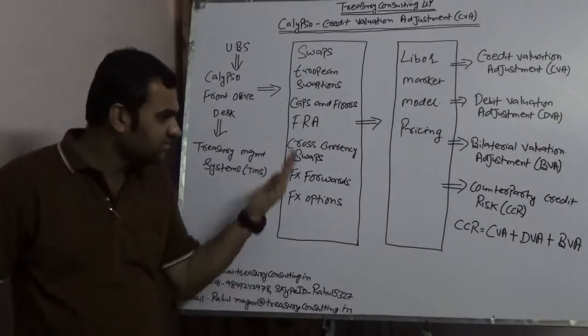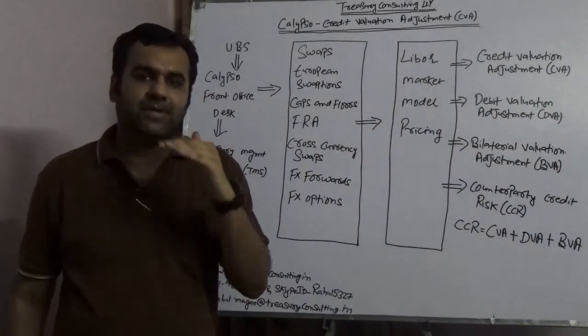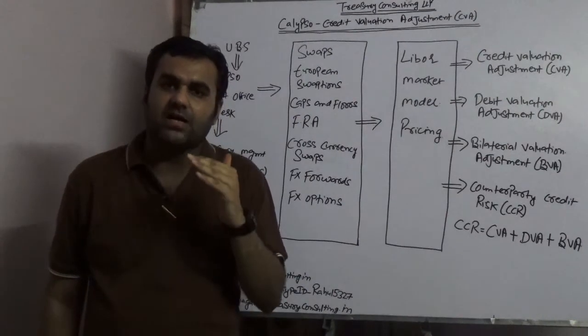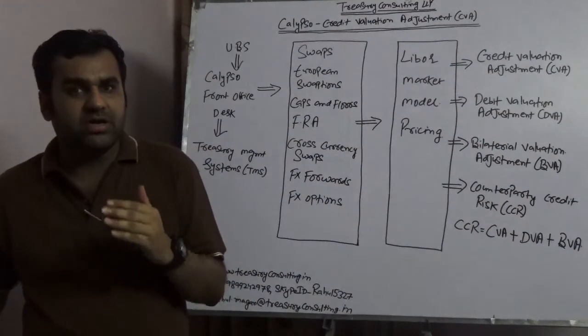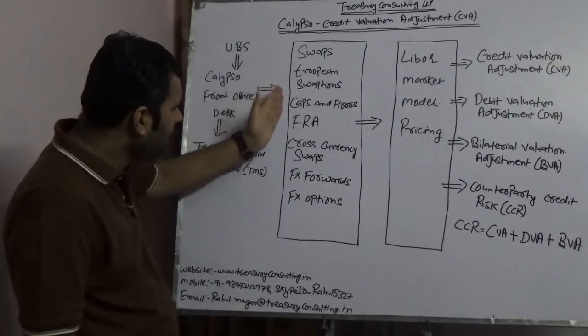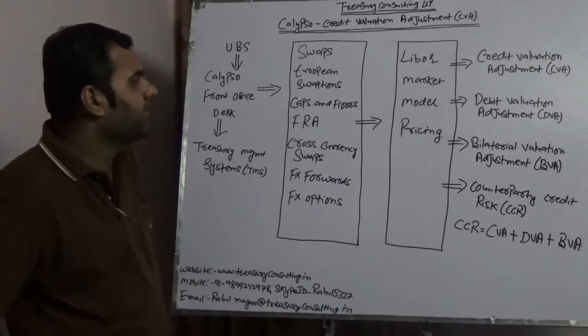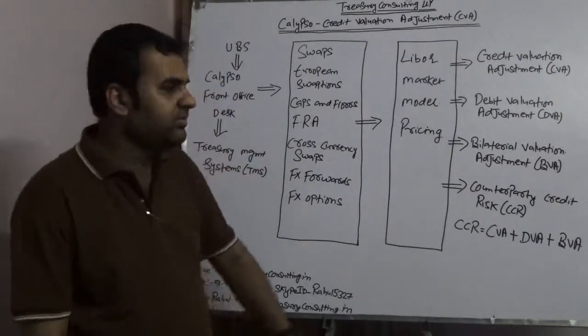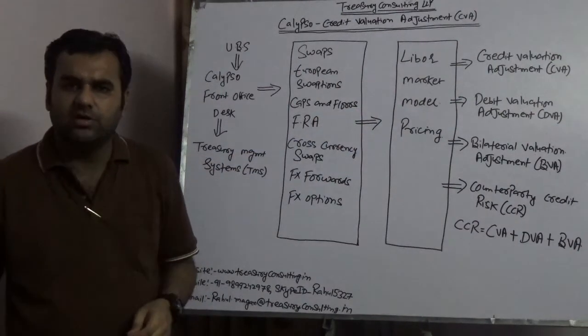All these contracts which the clients are taking involve pricing done by the Calypso pricer. Sometimes Calypso pricers are customized; some banks customize the pricers. The pricing happens through a model well recognized in the market, known as the LMM model, which is the LIBOR market model—my favorite model.